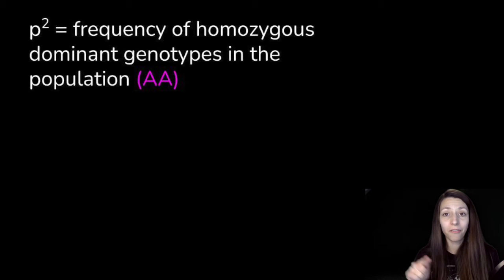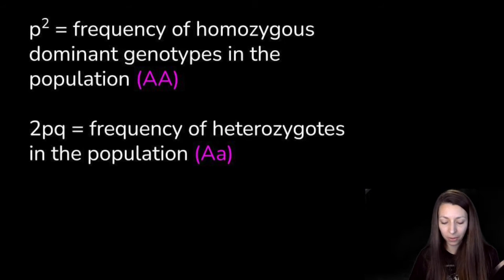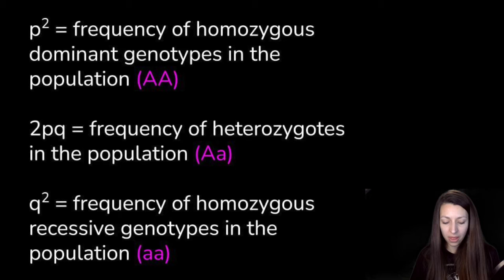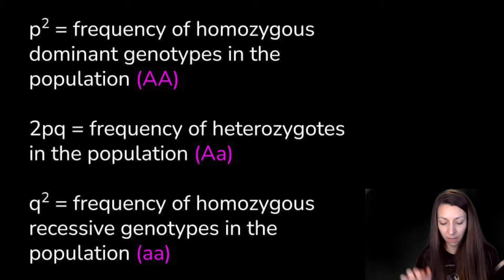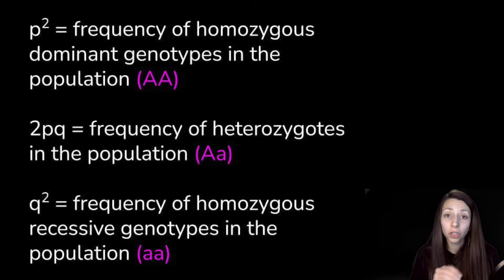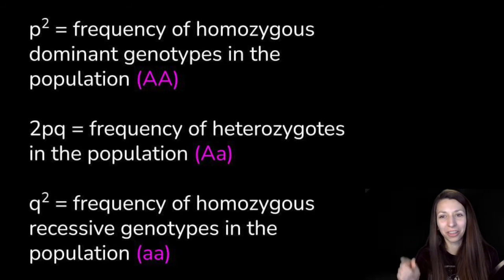2PQ is the frequency of the heterozygous genotype in the population, like big A, little a. And Q² represents the frequency of the homozygous recessive genotype in a population. If you're confused, just come back to this key so you know which letters represent which genotypes and allelic frequencies.